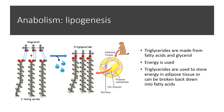Let's talk about lipogenesis. Triglycerides are made by combining glycerol and three fatty acid chains. Like most anabolic reactions, energy is consumed. These triglycerides are used to store energy in our body in the form of fat and adipose tissue, or they can be broken back down into fatty acids, which in turn can be used to generate energy.